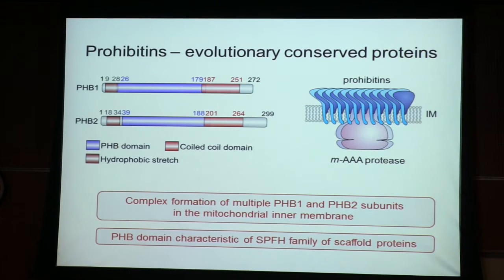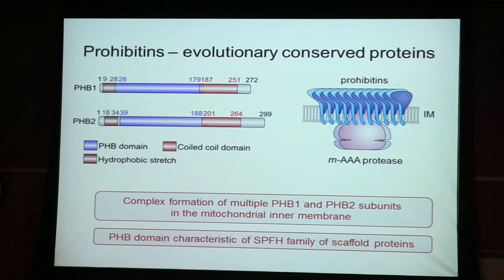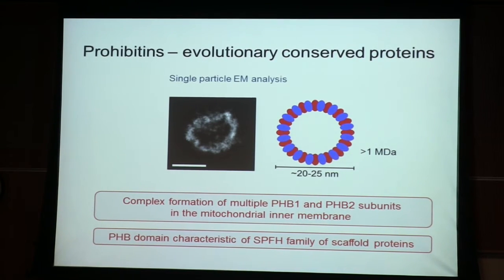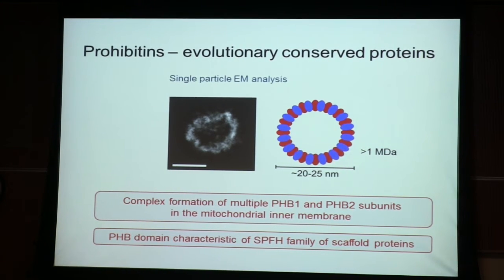The m-AAA protease is an ATP-dependent protease in the inner membrane. It forms large assemblies of about 2 megadaltons in the mitochondrial inner membrane with the prohibitins. These are highly conserved proteins, found in all eukaryotic cells, always with two members — PHB1 and PHB2 — forming large complexes in the mitochondrial inner membrane. We purified them from yeast and single-particle EM analysis combined with cross-linking studies suggested that prohibitin subunits form large rings in the inner membrane with a diameter of about 20 to 25 nanometers.